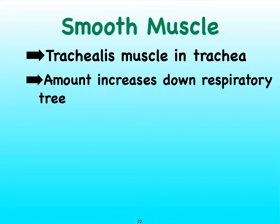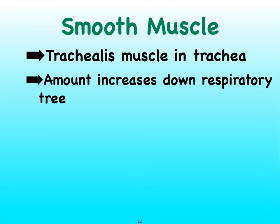When it comes to smooth muscle tissue, relative to the size of our trachea, the trachealis muscle is essentially a small portion of that trachea, but it is smooth muscle. Relatively speaking, we see an increase in the amount of smooth muscle as we move down the respiratory tree. We're going to soon learn that smooth muscle plays an important role in bronchoconstriction and bronchodilation. And so this wraps up our discussion of the bronchial tree.